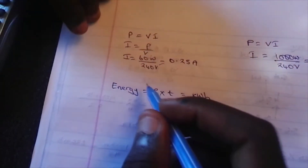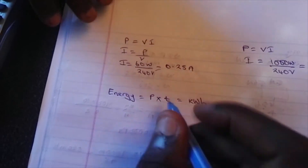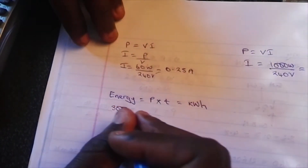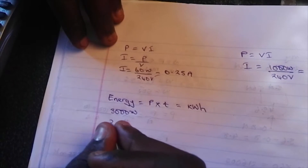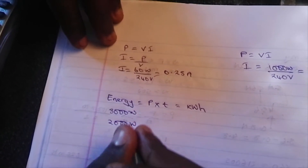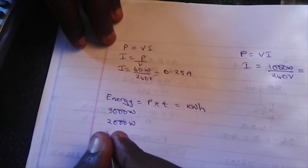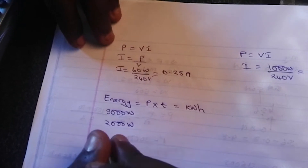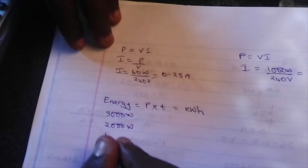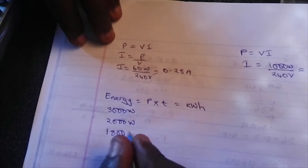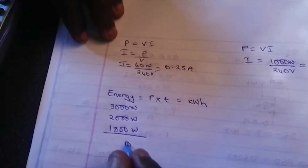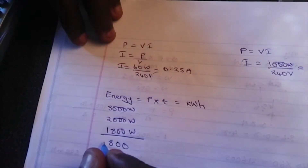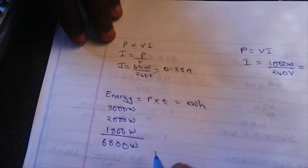The power should be in kilowatts and the time in hours. We've been given 3,000 watts plus 2,000 watts, then plus two heater plates each rated 900 watts, so this will be 1,800 watts. This gives us 6,800 watts total.